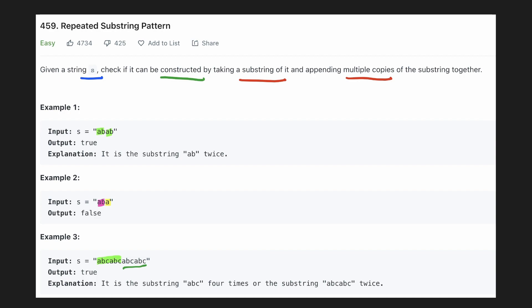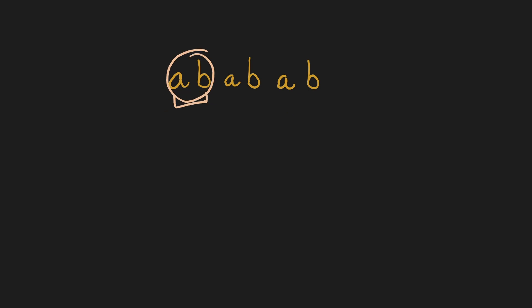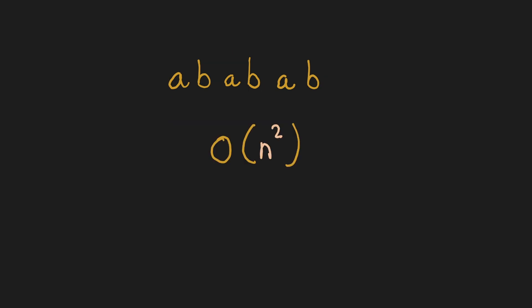Let's try to come up with an intuitive solution. One obvious way to solve this is by taking all the substrings starting from the first character and then checking if that substring is repeated till the end of the string. For example the substring a is not repeated hence it is not valid. We check the next substring and see that it is repeated to construct the original string, hence it is valid. The time complexity of this solution would be O(n²) because we have to check for each of the substrings. Let's try to come up with a better solution.